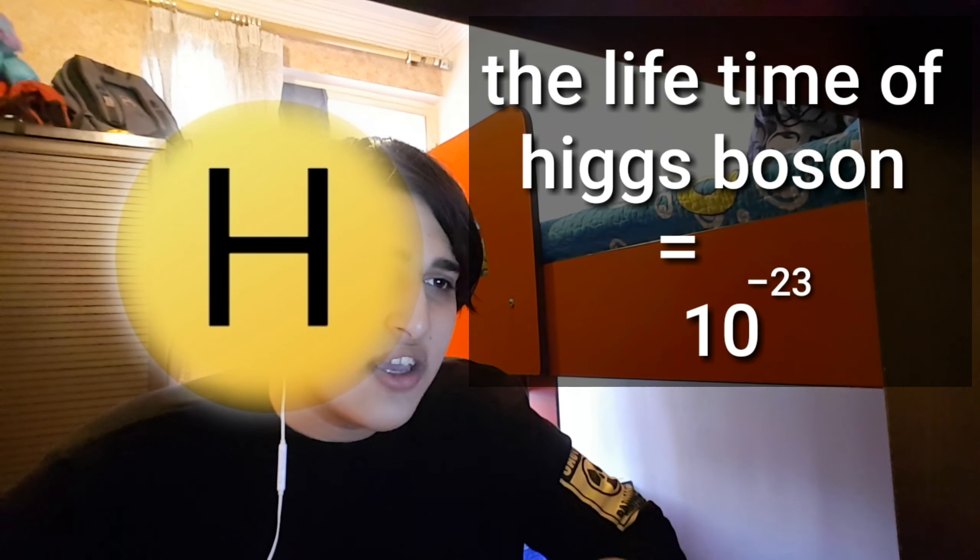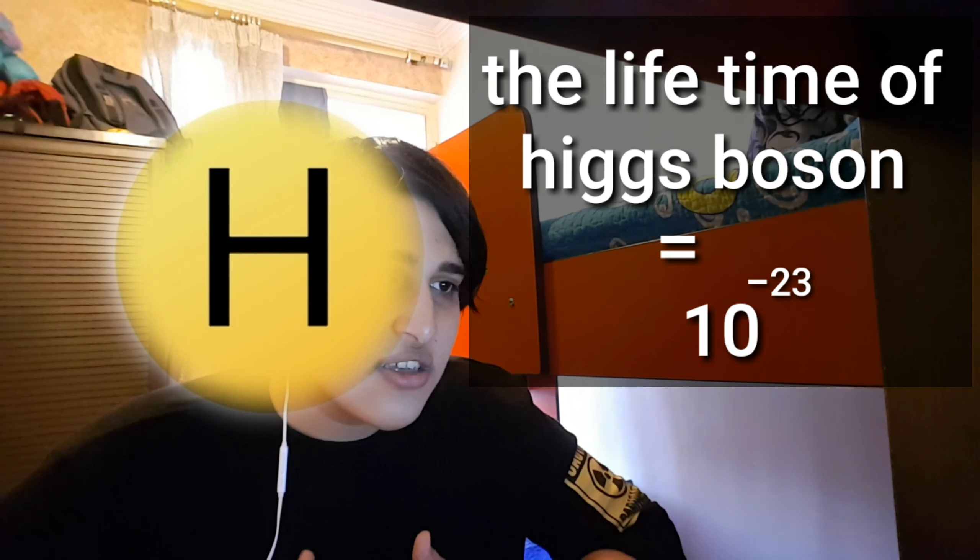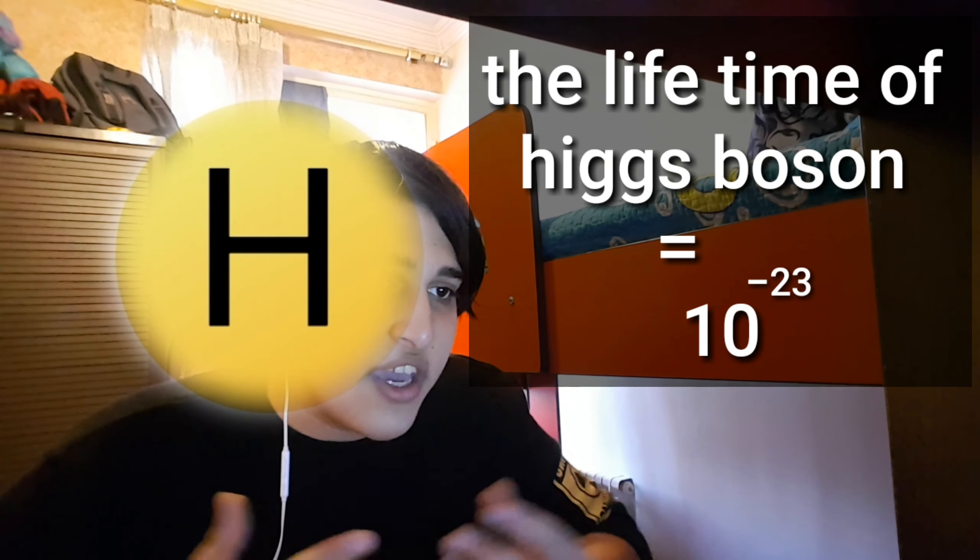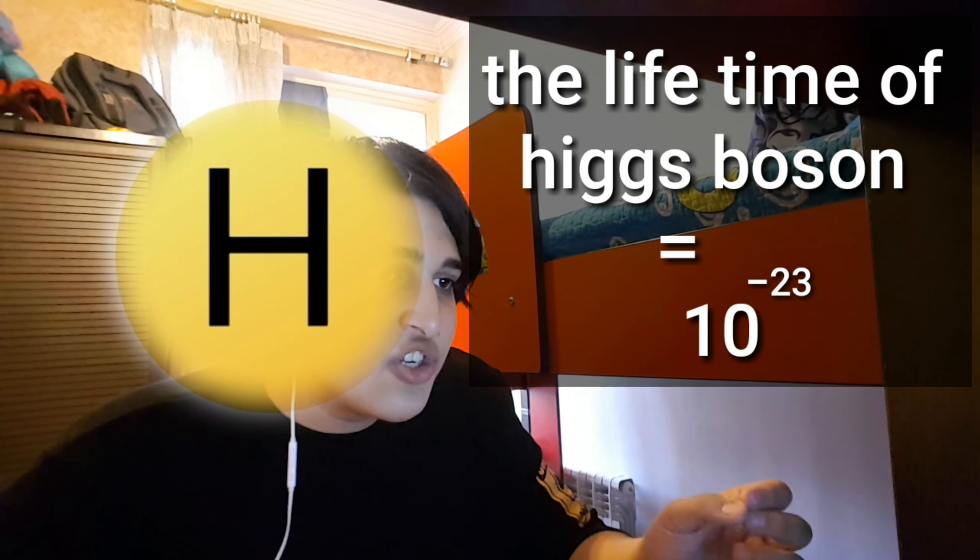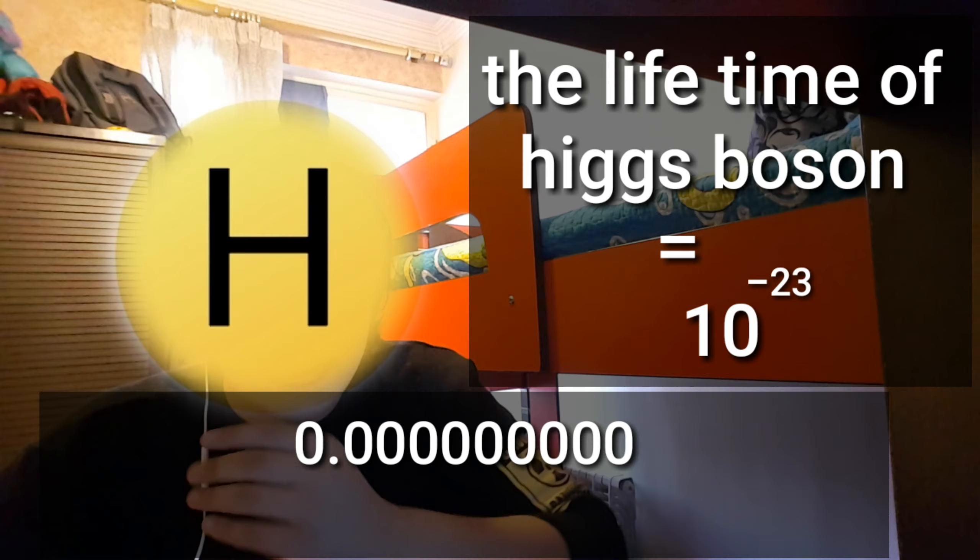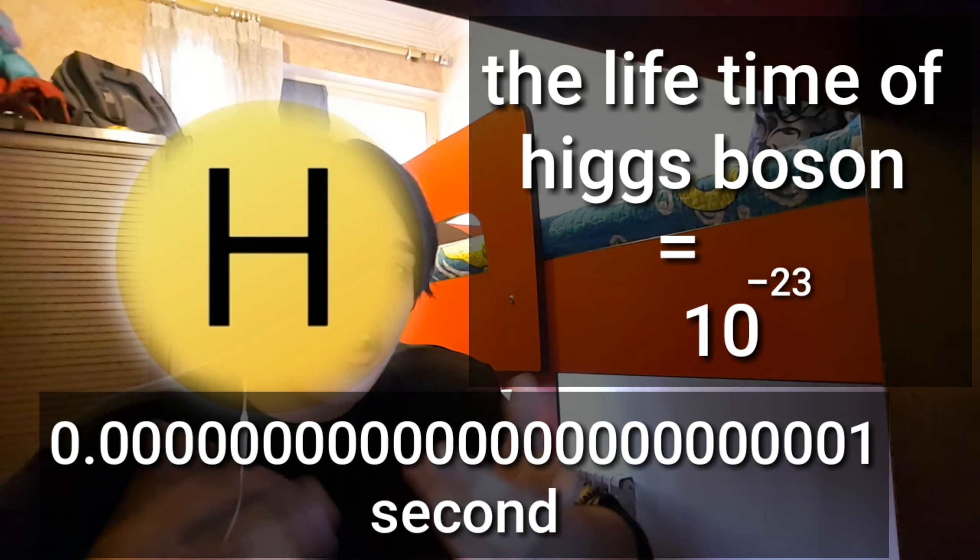The duration that the Higgs resists chronologically is 10 to the power of minus 23 seconds. Or for more clarification, the Higgs boson lives for 0.23 zeros one second.